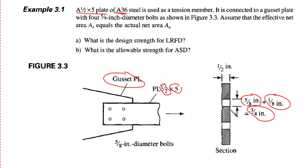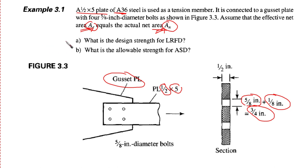The hole diameter is five-eighths inch plus one-eighth inch tolerance, giving a total hole diameter of three-quarters inch. Assume that the effective net area Ae equals the actual net area An — this is only an assumption for this example. Later we will see that Ae may be less than An. We want to find the design strength for LRFD and the allowable strength for ASD.